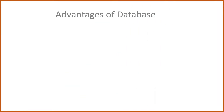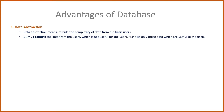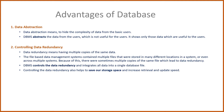First we will understand what are the basic advantages of the database. One: data abstraction. Data abstraction means to hide the complexity of data from the basic users. DBMS abstracts the data from the users which is not useful for the users — it shows only those data which are useful to the users.